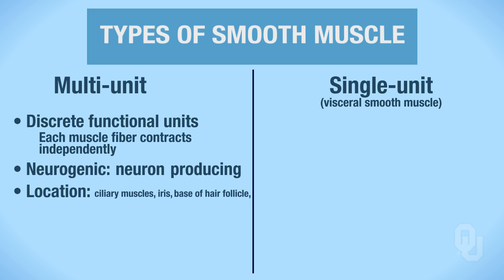The smooth muscle at the base of the hair follicle is also multi-unit smooth muscle. When those muscles contract and the hair stands up, that's what causes goosebumps. Some of the smaller airways of the lungs have multi-unit smooth muscle, and the walls of your larger blood vessels are also types of multi-unit smooth muscle.